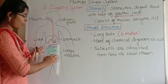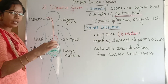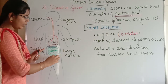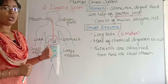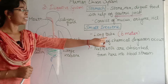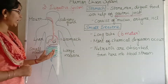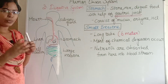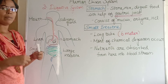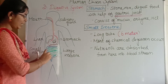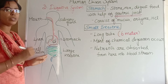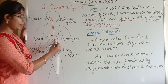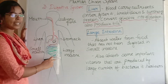From the stomach, food enters the small intestine. The small intestine is a long tube of about 6 meters. Here, most of the chemical digestion takes place. The digested nutrients are absorbed and mixed into the bloodstream in the small intestine.